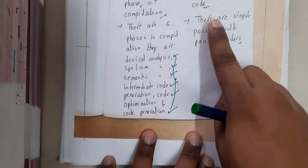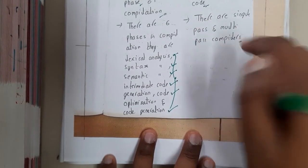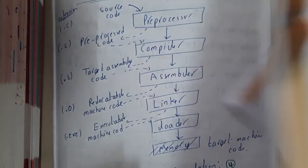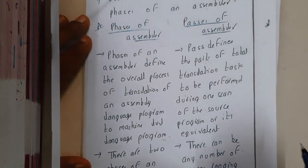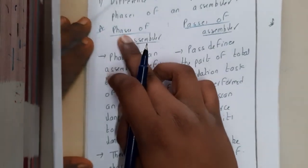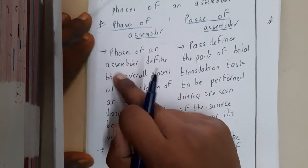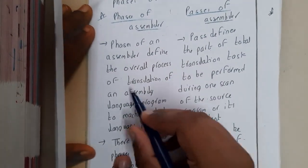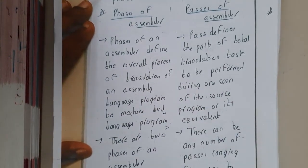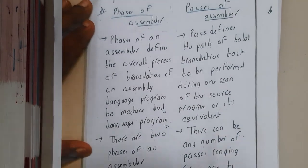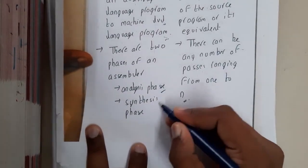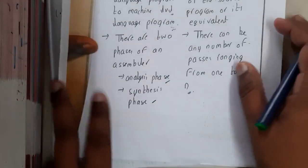Passes of a compiler are nothing but single pass or multi-pass. Now let us go through the differences between passes and phases of assembler. Phases of an assembler define the overall process of translation of an assembly language program into machine language. The assembler is also divided into multiple phases — those phases are the analysis phase and the synthesis phase.